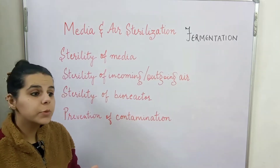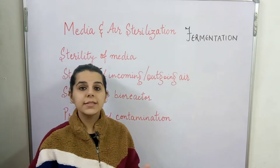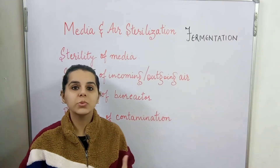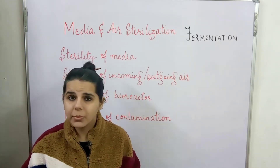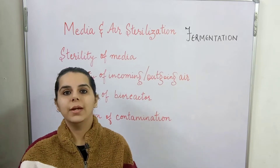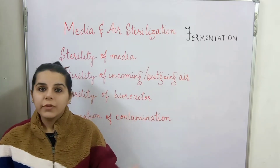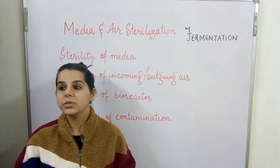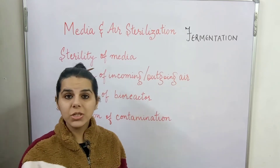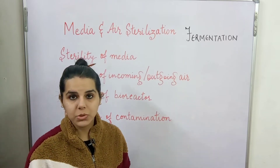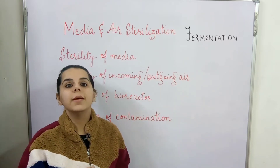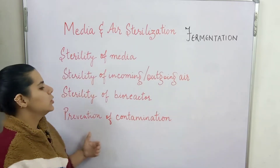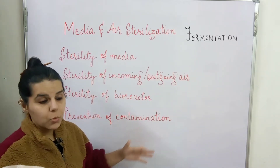Thirdly, sterility of the bioreactor. The bioreactor is the basic fermenter used in the fermentation process for producing the desired product, and it is essential that it be sterilized to get the product free of contamination. There are a number of ways to achieve sterility of the bioreactor — heat treatment, physical processes, radiation, and chemical treatments.